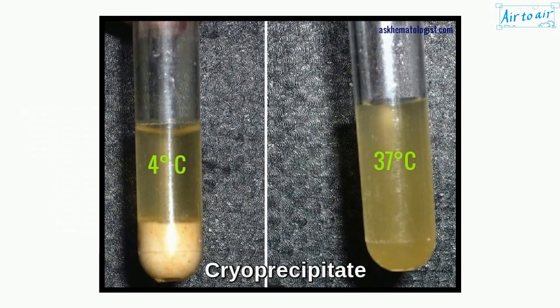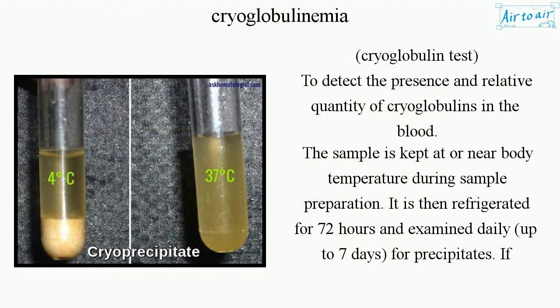The cryoglobulin test detects the presence and relative quantity of cryoglobulins in the blood. The sample is kept at or near body temperature during sample preparation. It is then refrigerated for 72 hours and examined daily, up to 7 days, for precipitates.